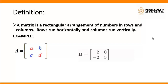Rows run horizontally and columns run vertically. For example, A is equal to [a, b, c, d]. When we write numbers in a rectangular form enclosed in square brackets or round brackets, we call it a matrix.